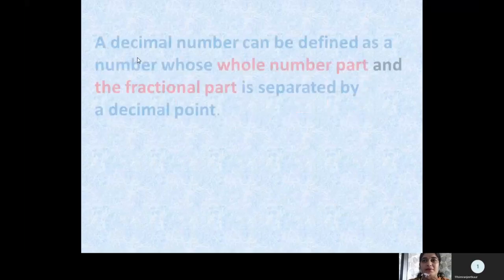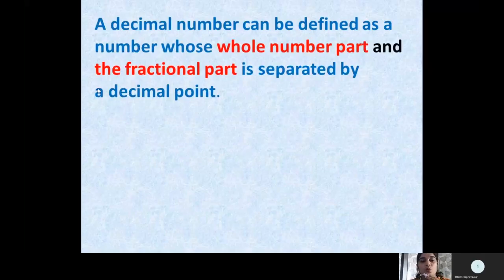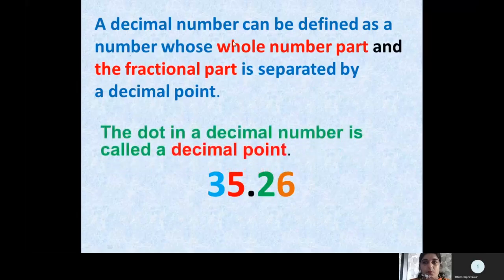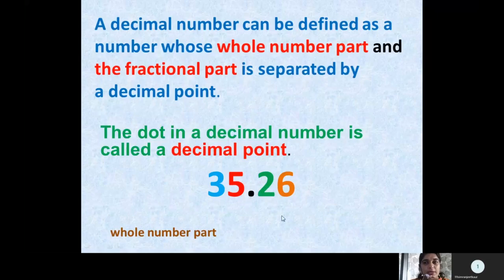A decimal number is that number whose whole number part and fractional part is separated by a decimal point. It means a decimal number has three parts: one is the whole number, after that the decimal point, and then we have the fractional part. For example, here we have the decimal number 35.26. This black color point is called decimal point. Before this point we have the whole number part and after this point we have the decimal part, or you can say fractional part.